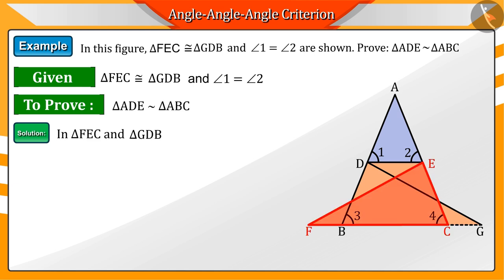Because triangles FEC and GDB are congruent, we know that corresponding sides of congruent triangles are equal, by which we get equation 1.